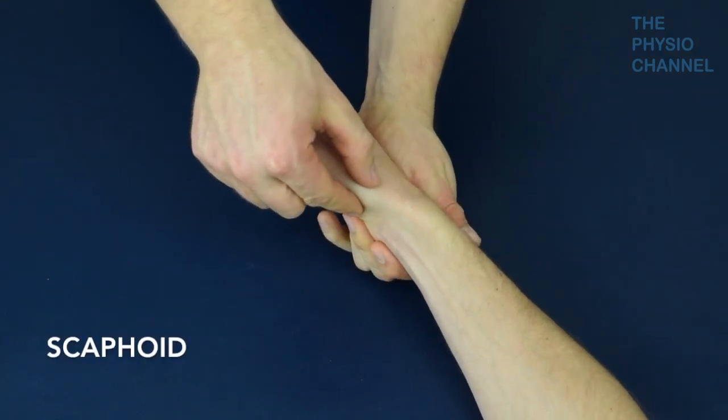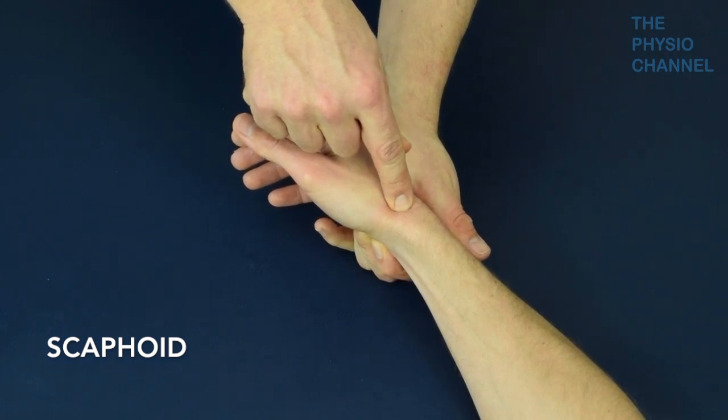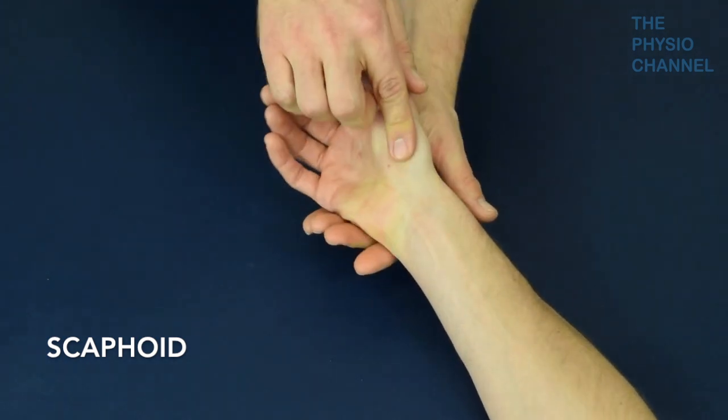Next the scaphoid can be palpated in the anatomical snuff box below the trapezium with the scaphoid tubercle being the most prominent.